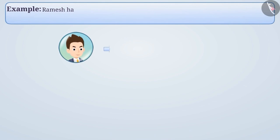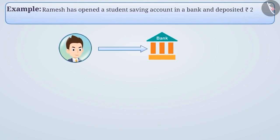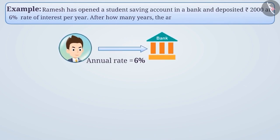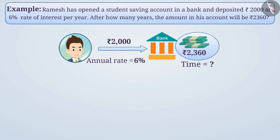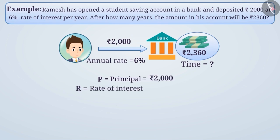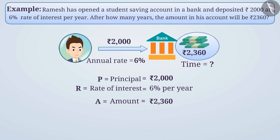Example 3. Ramesh has opened a student savings account in a bank and deposited Rs 2,000 at 6% rate of interest per year. After how many years will the amount in his account become Rs 2,360? Here, P (principal) = Rs 2,000, R (rate of interest) = 6% per year, A (amount) = Rs 2,360, and we have to find the time T.